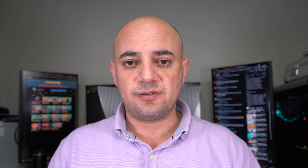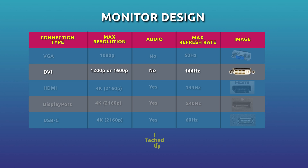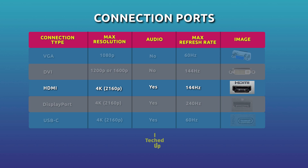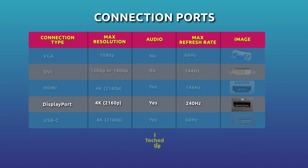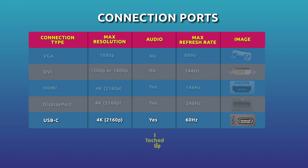There are several connection port options to connect your monitor to your computer. VGA is now pretty much obsolete — it's an older connection that doesn't support resolutions above 1080p. DVI is similar to HDMI but doesn't support audio transmission. HDMI allows you to transmit both audio and video and offers higher resolutions. DisplayPort is similar to HDMI but allows higher refresh rates of up to 240Hz. USB Type-C is another option if your monitor supports it.